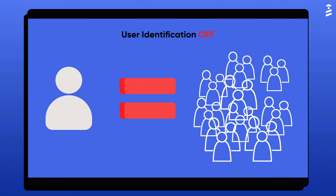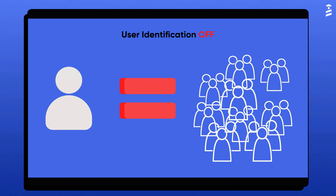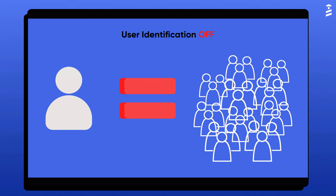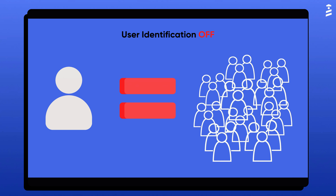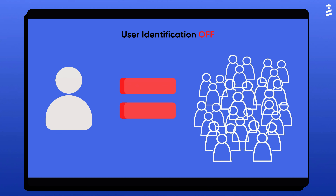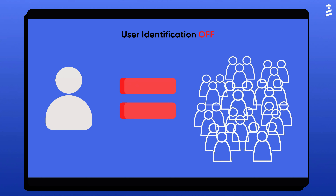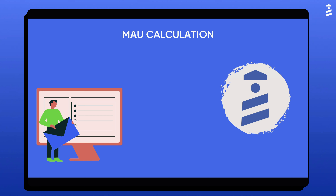That means the same user will be counted towards your MAU if they use incognito mode, use a different computer or browser, clear their browser cookies, or if their session expires.